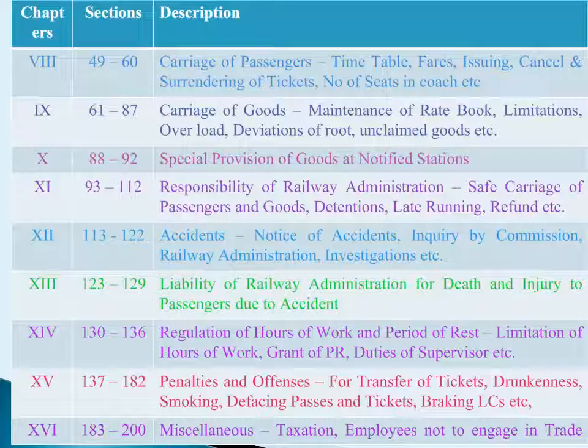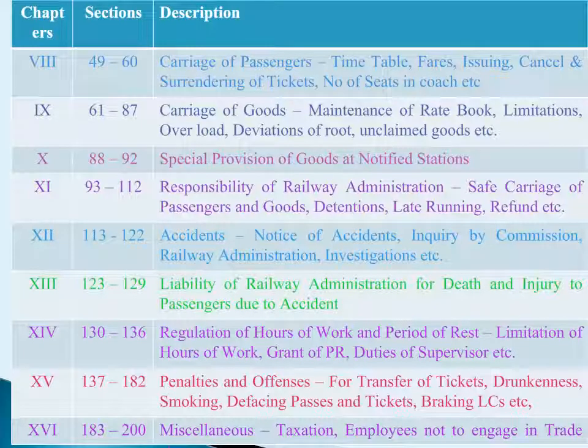Chapter 14: Regulation of Hours of Work and Period of Rest has seven sections, Sections 130 to 136. In these sections, limitation of hours of work, grant of PR, railway servants remaining on duty, supervisors of railway labour, etc. are given.